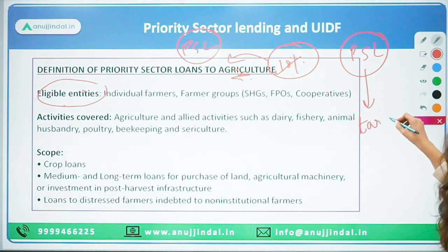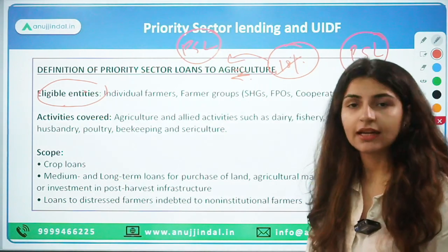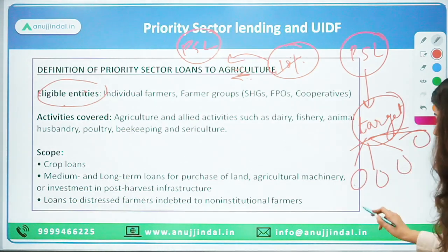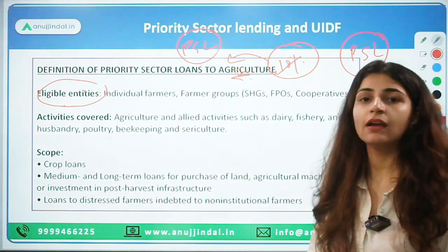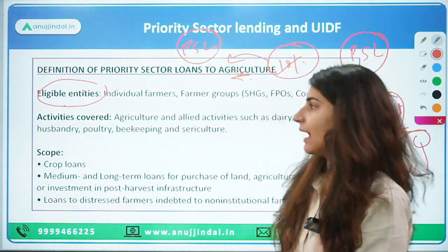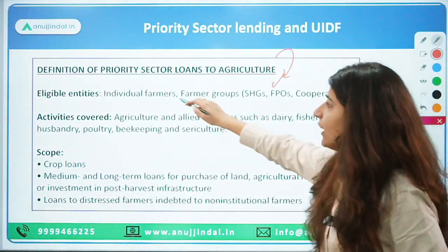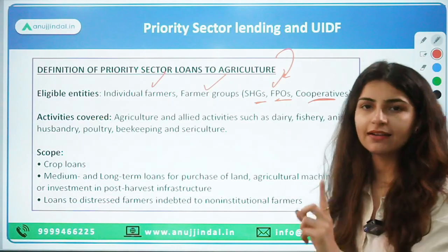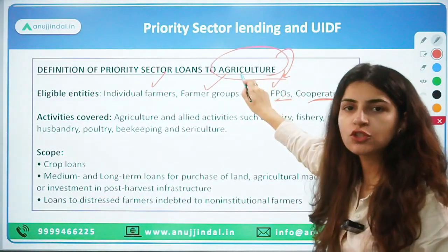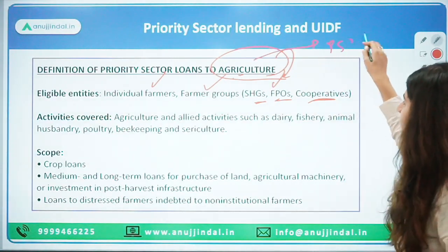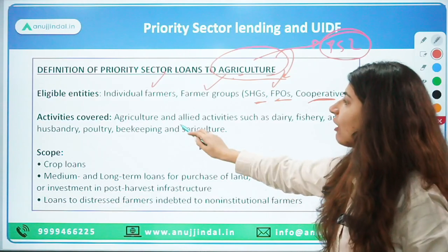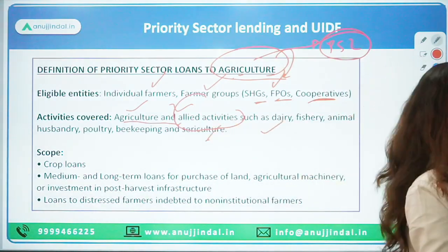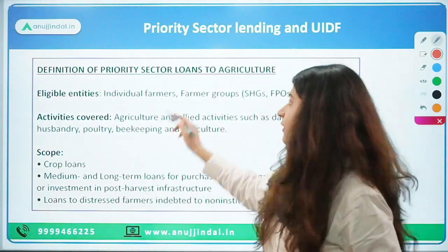Under agriculture, allied activities such as beekeeping, poultry, sericulture, fisheries, and dairy are also covered. The scope includes crop loans, medium to long-term loans for purchase of land, agriculture machinery, and investment in post-harvest infrastructure. These are all covered under the PSL target for agriculture. If banks give crop loans, those are covered under PSL. You must learn these as they are important for the exam.